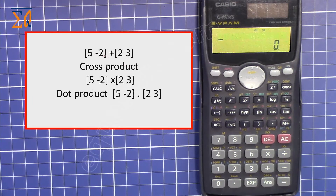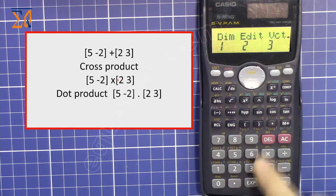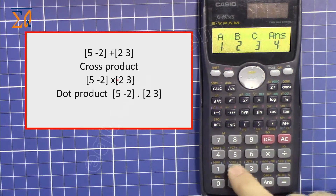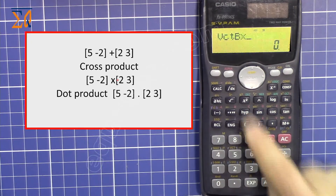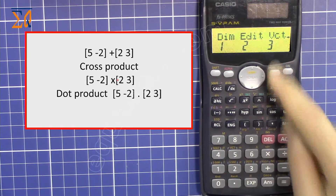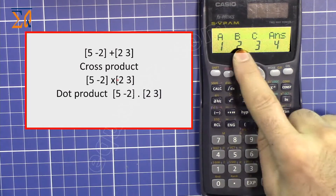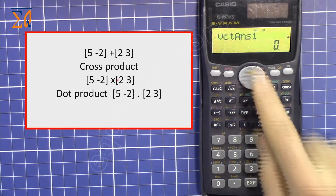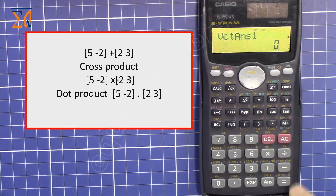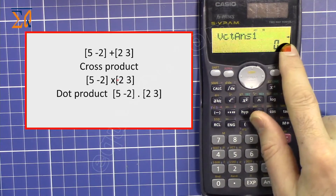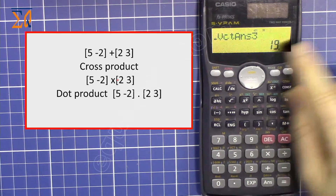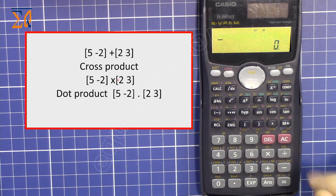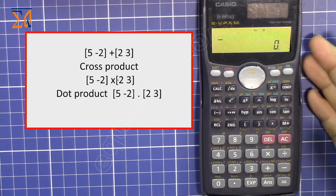Now let's do the cross product. Press SHIFT 5, then 3, then 2 for vector B. Press multiply, then SHIFT 5, then 3, then 1 for vector A. So we're computing vector B cross vector A. Press equals and you can review the result: 0, 0, and then 19. Press ALL CLEAR.